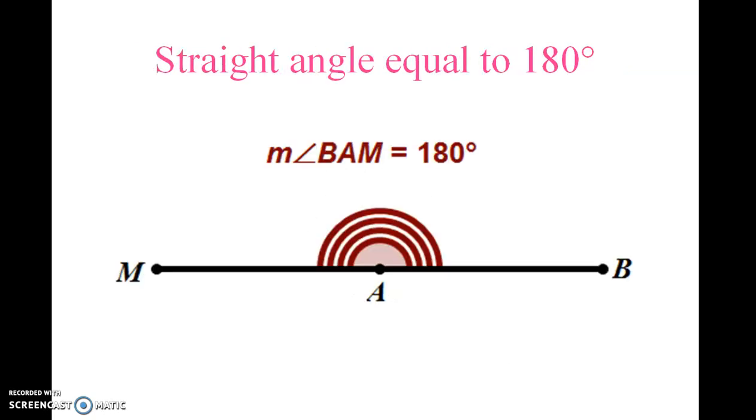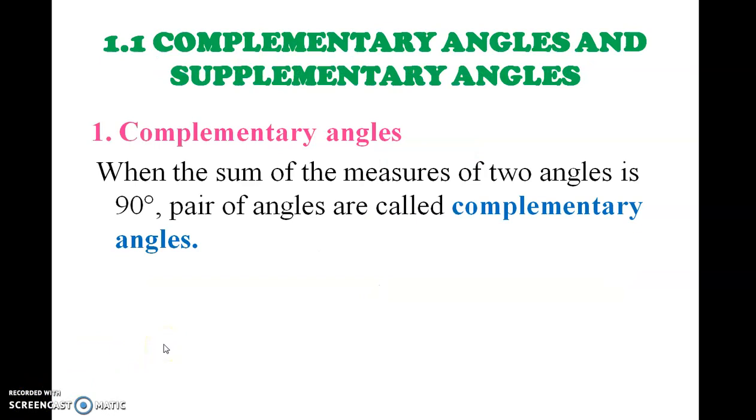Now let us see the straight angle, equal to 180 degrees. Now let us see complementary angles and supplementary angles. First, complementary angles: when the sum of the measures of two angles is 90 degrees, the pair of angles are called complementary angles.